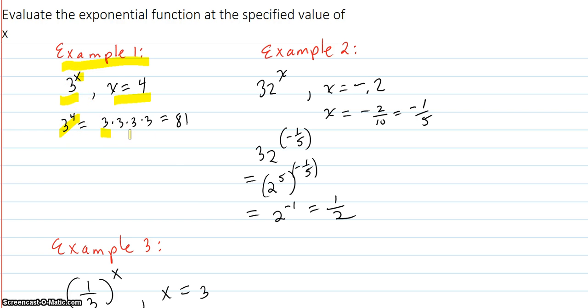3 to the 4th, there's 4 factors of 3, which is 81. Of course, you can always break it up like this: 9 times 9 equals 81. And all these you could do on a calculator also.